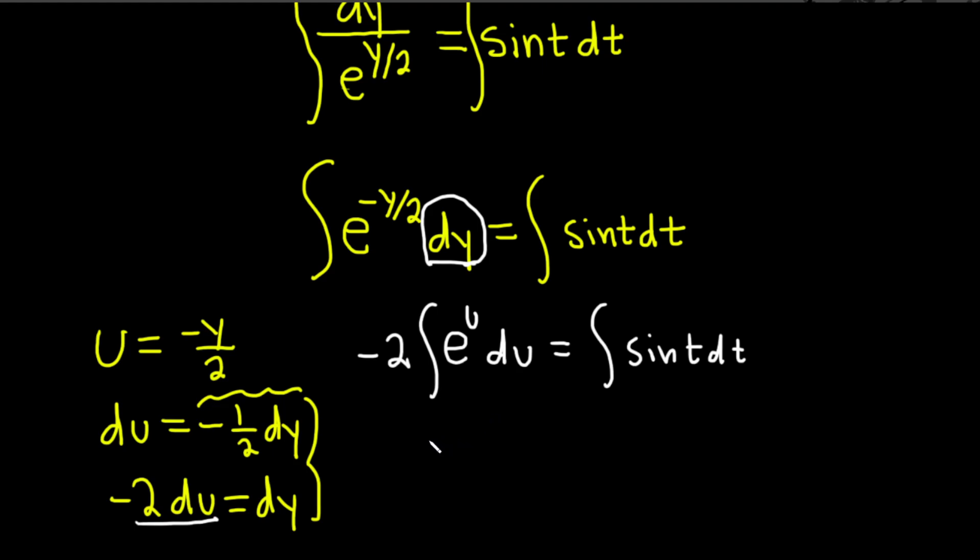Integrating e to the u we just get e to the u. So this is negative 2 e to the u. And you could add a plus c but when you add one to the right hand side you'll have plus c's on both sides. So you can just combine them into a single plus c. So I'm just only going to write it on the right hand side.